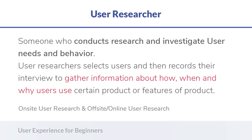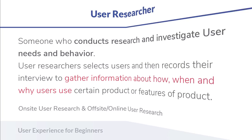You can do on-site user research, off-site user research, or online user research. On-site means you go to the user's office where they actually use the products. Off-site means you call the user to your office, set up a lab, and record the interview. Online user research means you post questions online and users who meet your criteria answer them.